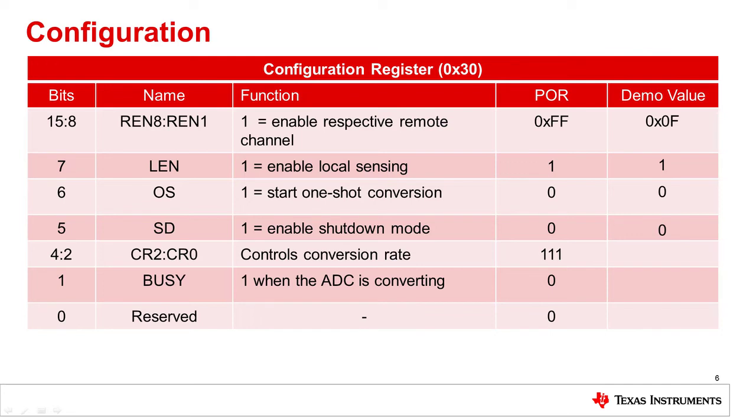Bits 4 to 2 control the conversion rate when not in shutdown mode. We will set these bits to 101, which corresponds to two conversions per second. Table 11 of the datasheet shows how these bits are interpreted.